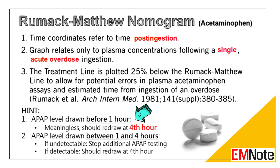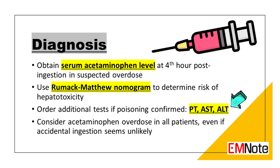Acetaminophen concentrations obtained earlier than 4 hours are not reliable for determining treatment needs and can lead to mismanagement, as they may not reflect peak levels. Therefore, it is crucial to obtain the 4-hour level for accurate assessment and treatment decisions. Liver function tests such as AST and ALT are useful to assess liver function. If poisoning is confirmed and the time of ingestion is unclear or unknown, clinicians should order liver function tests including PT, AST, and ALT. Acetaminophen overdose should be considered in all patients, even if accidental ingestion seems unlikely, because acetaminophen is found in many common formulations, ingestion is often not reported especially in children, and symptoms during early stages are not always obvious.